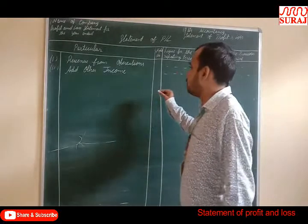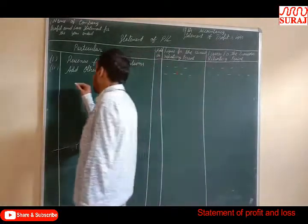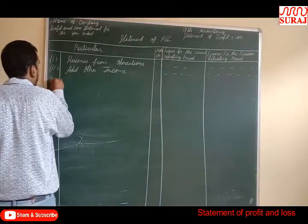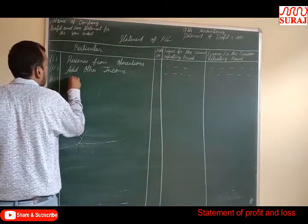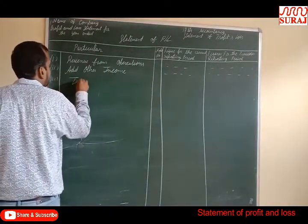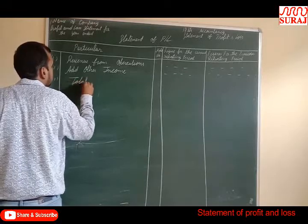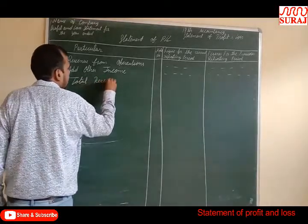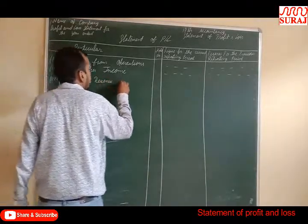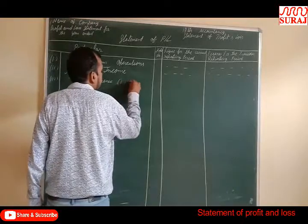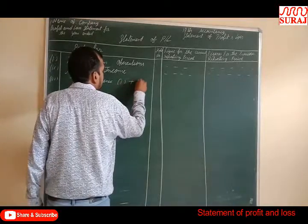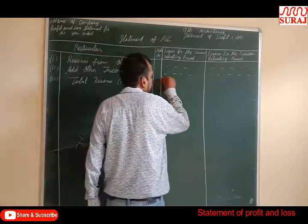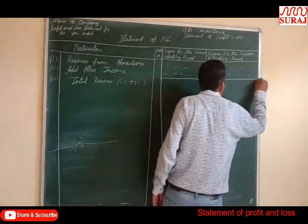From items one and two, we get the third point: Total Revenue. Total Revenue is derived from the sum of item one, Revenue from Operations, and item two, Other Income.